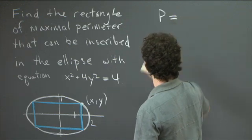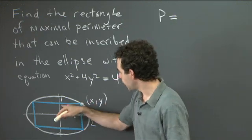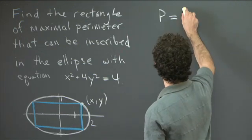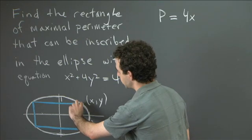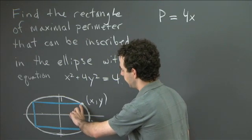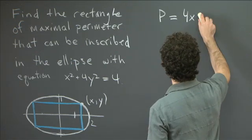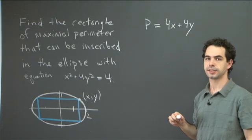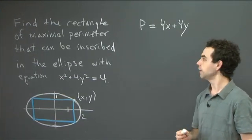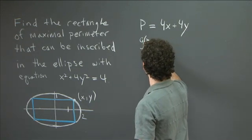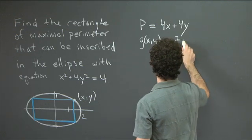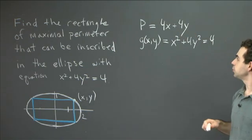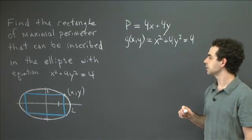The perimeter p, which is a function of x and y: x is this distance, so the length of the horizontal edge of the rectangle is 2x and we've got two of those, giving 4x from the horizontal sides. The height is y, so the length of the vertical side is 2y, making the perimeter 4x plus 4y. That's our objective function that we're trying to maximize. We also have the constraint function g, which is x squared plus 4y squared, and the constraint is that g equals 4.